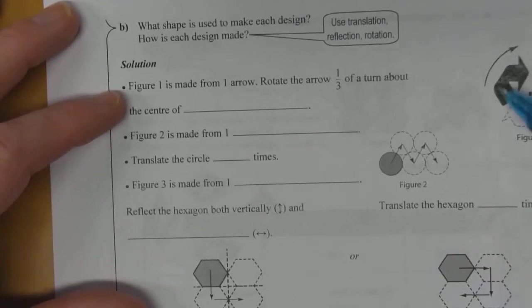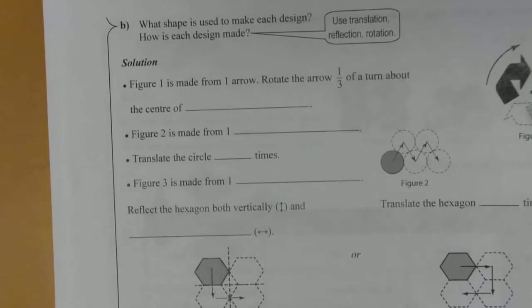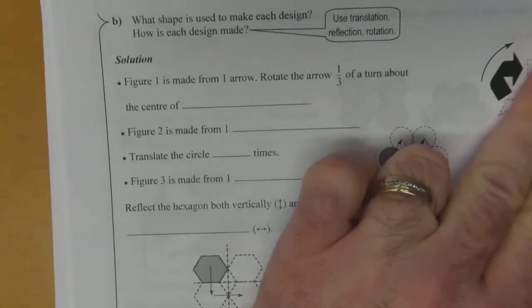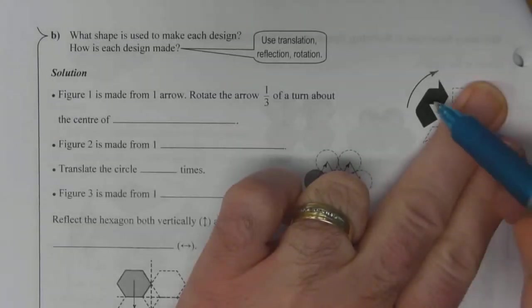Figure 1 is made from one arrow. If you rotate it one-third of a turn about its center—now here's the trick: if you've got just this original arrow, the center is not the center of the arrow.